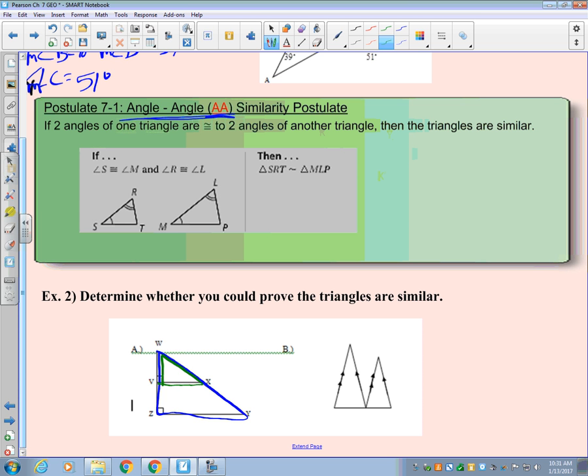For this green triangle, we have a 90-degree angle here. And for the blue triangle, he also has a 90-degree angle here at Z. So we know that angle Z is congruent to angle V. That's one angle. Which other angle can we show congruent, Madeline? W. They both share W. So angle W is congruent to angle W.